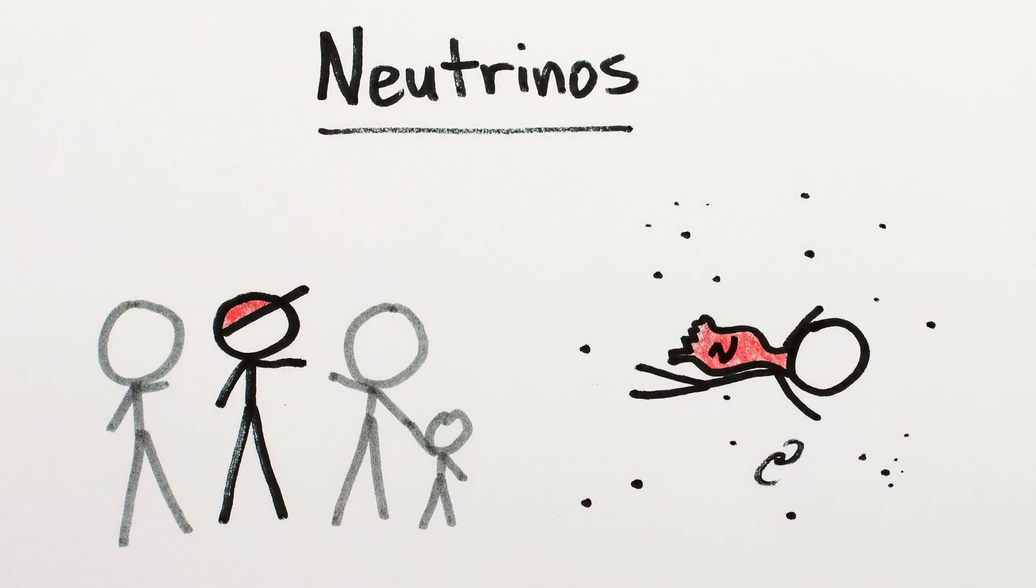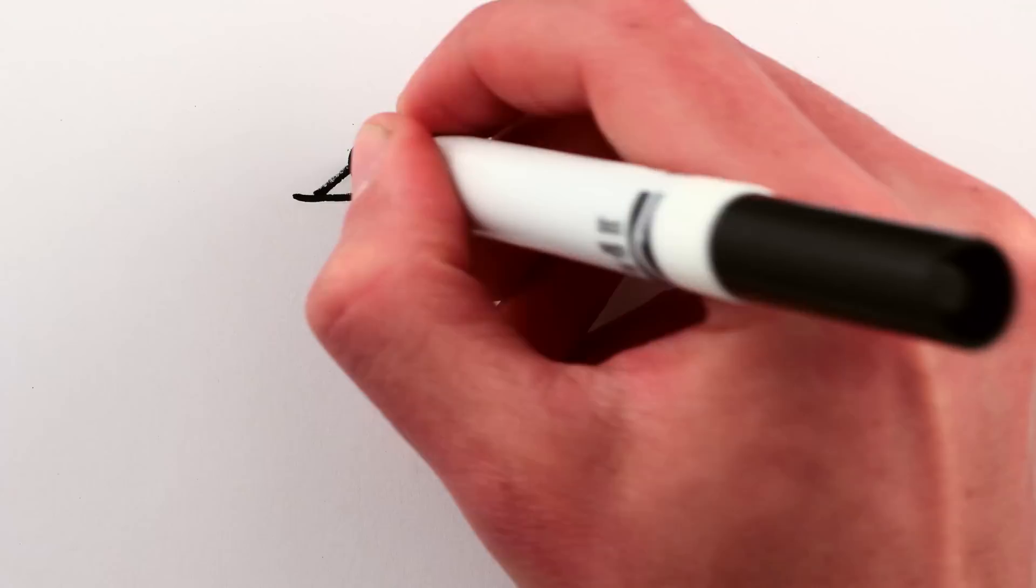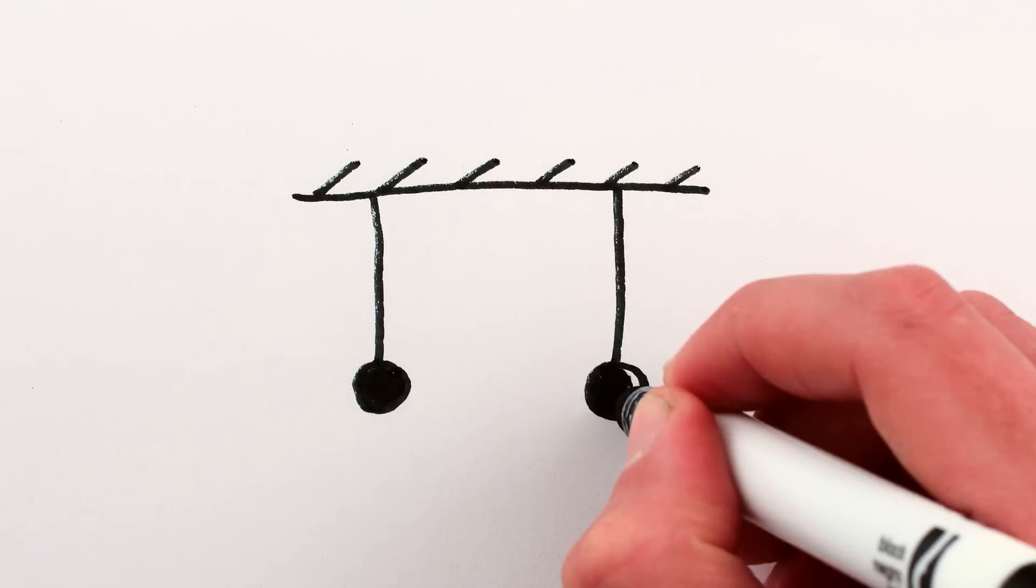Okay, so the main video was talking about how neutrinos shapeshift via superposition, and a similar thing happens if you take two pendulums and attach them with a spring.